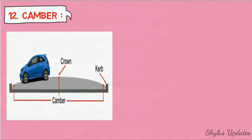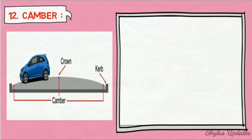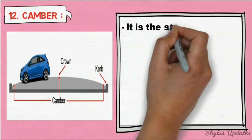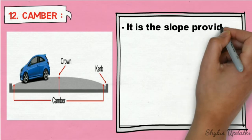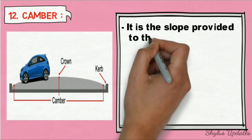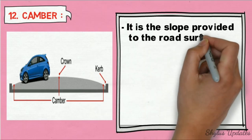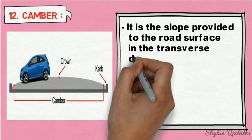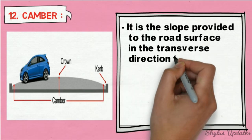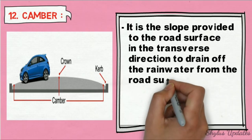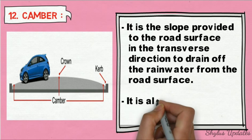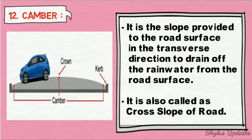Camber. It is the slope provided to the road surface in the transverse direction to drain off rainwater from the road surface. It is also called the cross slope of the road.